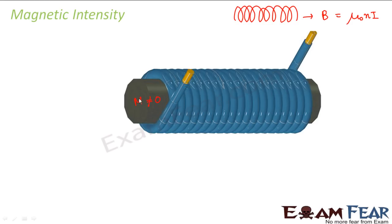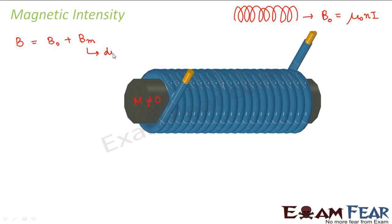So what will happen if we insert a material with non-zero magnetization? Will the magnetic field increase or decrease? Since in addition to the solenoid we introduce another object with some net magnetic moment, this will also induce some magnetic field. Therefore the net magnetic field will increase. Let us denote the previous magnetic field as B₀ — the solenoid's field before the material was inserted.